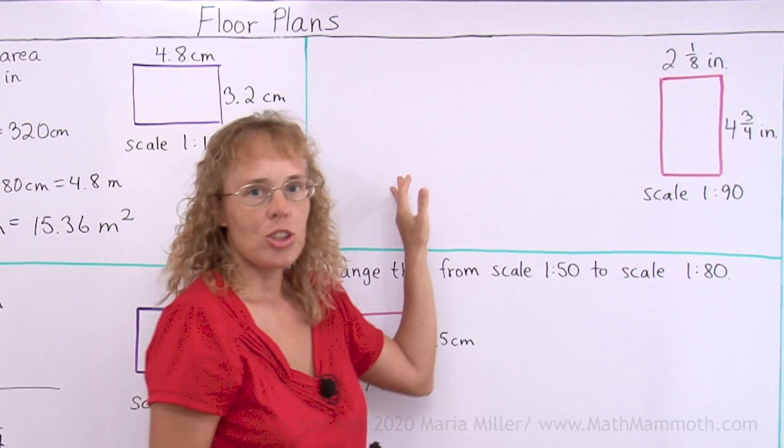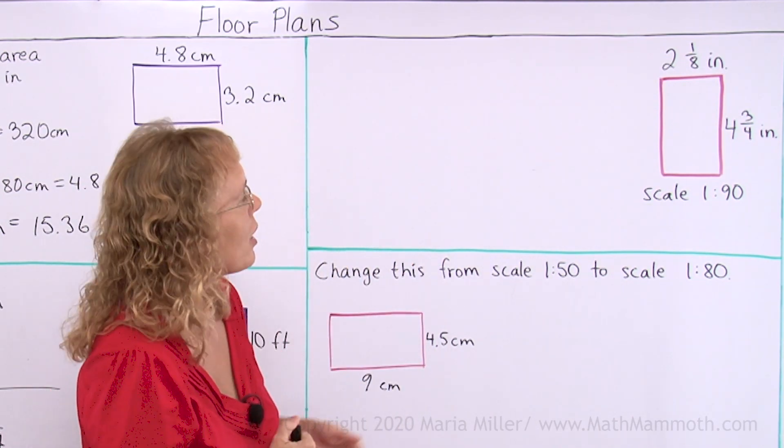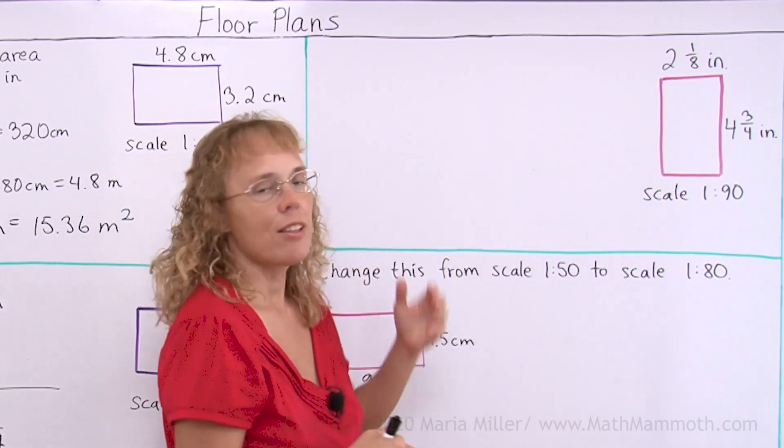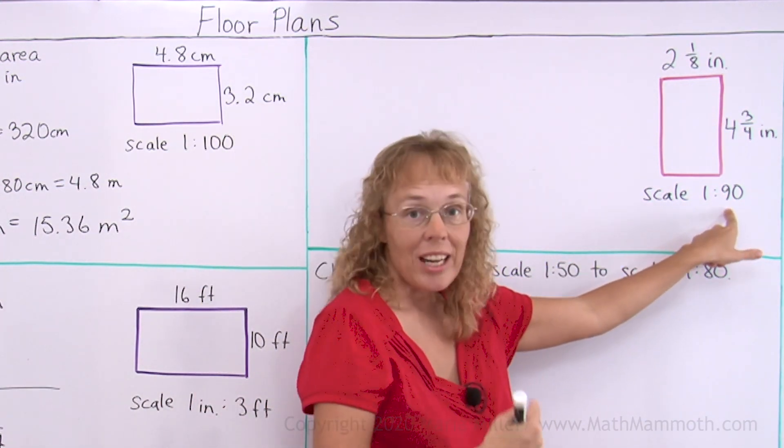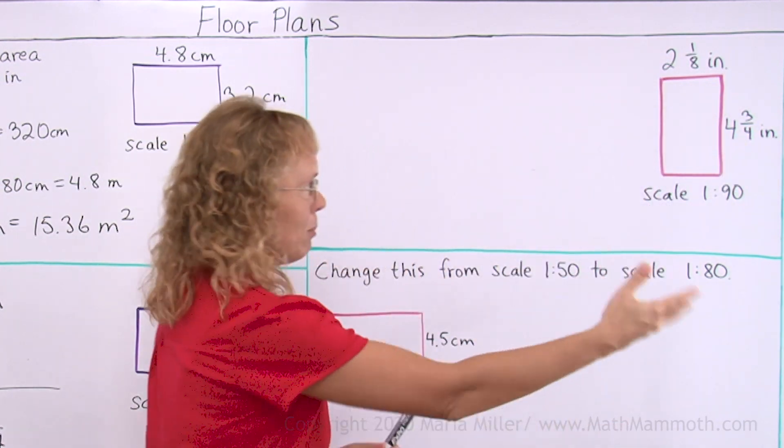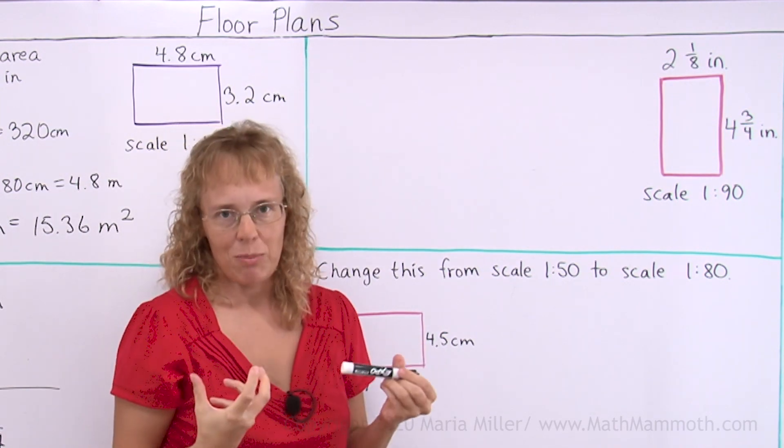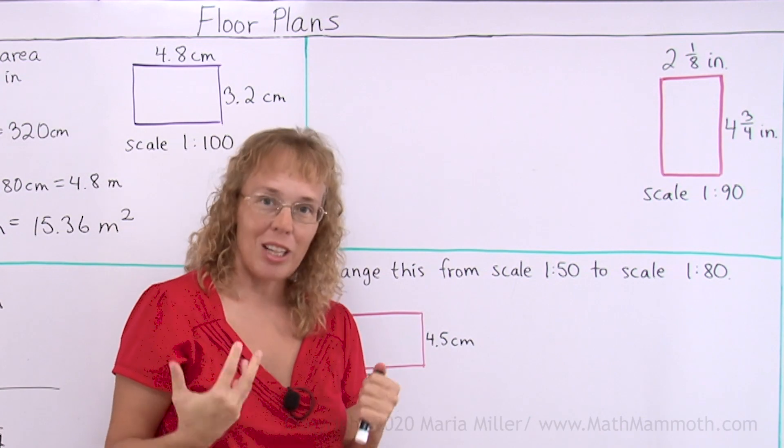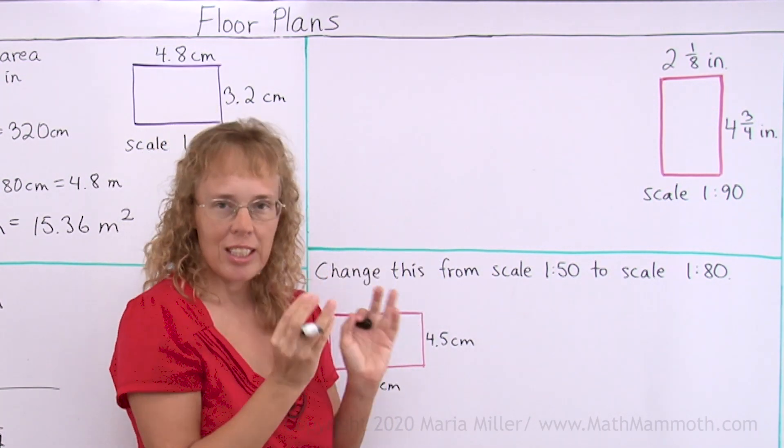Over here I chose some fractions, so we get used to dealing with fractions too. The scale is 1 to 90, and this is on paper. Now we will calculate the dimensions in real life. Since 1 unit corresponds to 90 units in reality, we multiply by 90 to get bigger amounts. And whenever it is a fraction, you can use fraction math, but I like decimals better for multiplying. They are easier to put into your calculator. So let's change this 2 and 1 eighth of an inch into decimal.